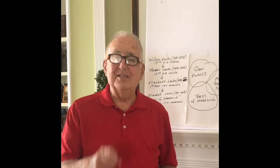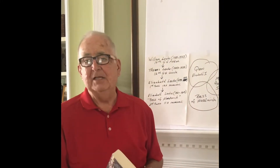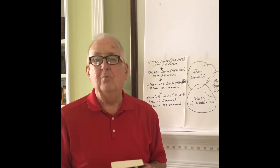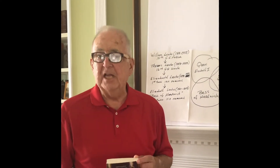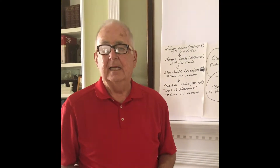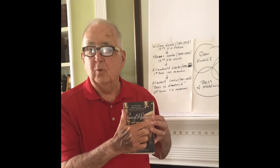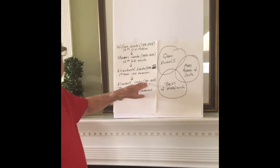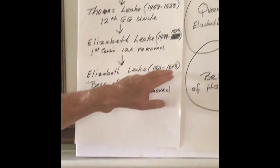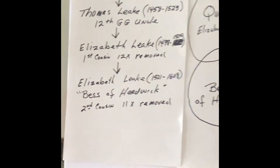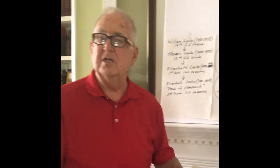Hi, I'm Harold Smith. This is the second video I'm making on my Leake genealogy. I'm going to tell you about Bess of Hardwick. She was born in 1521, and when she died in 1608, she was the richest woman in England. Just a fascinating story — she's my cousin.